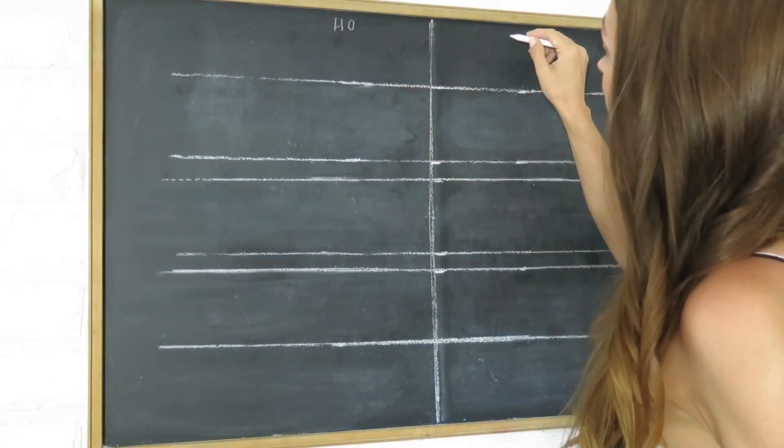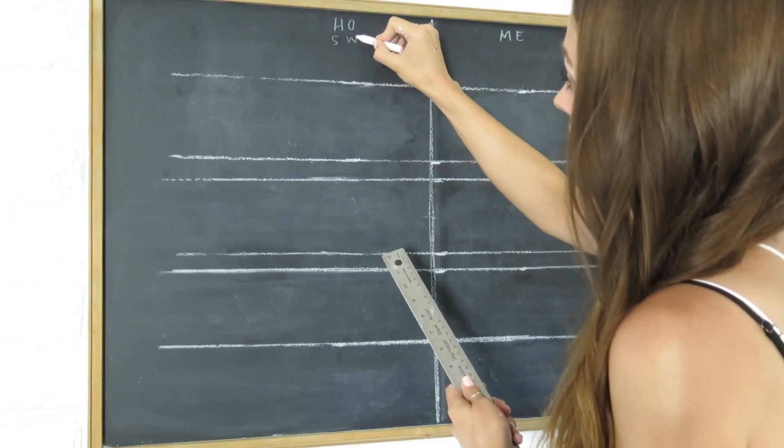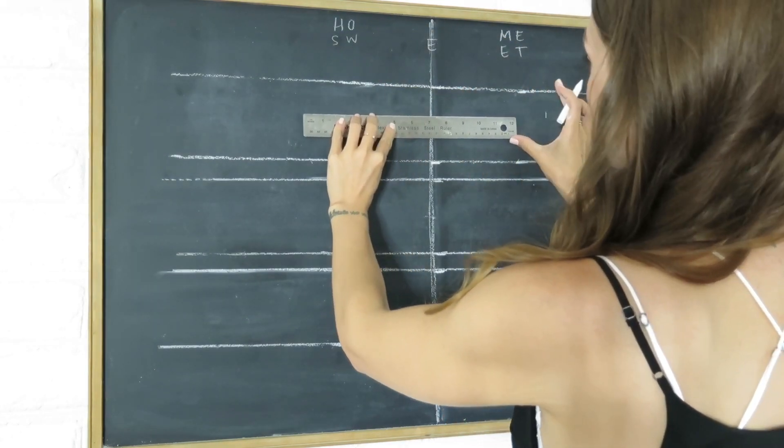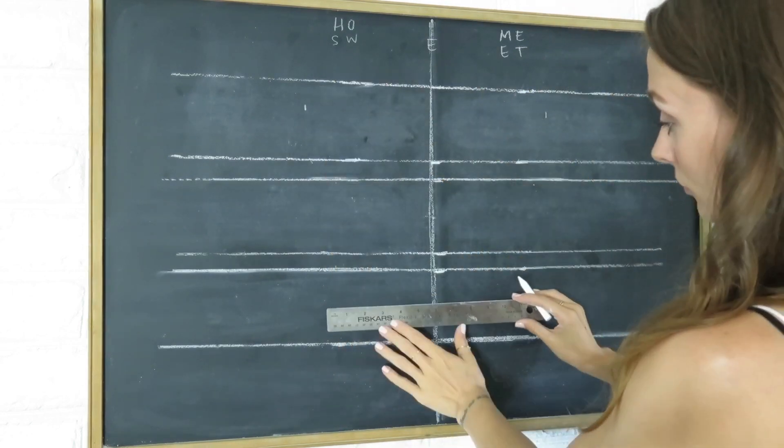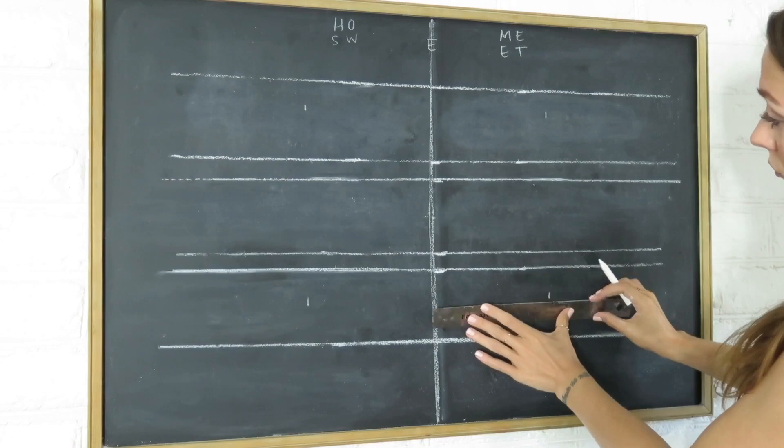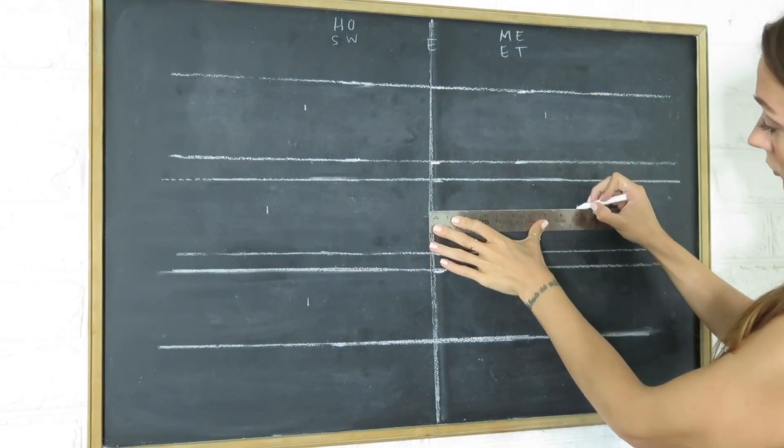When you finish your guidelines, do a light layer of chalk to erase all the smudges and fingerprints. I also marked where each word should begin and end, and I made a note at the top of the chalkboard to show me which letters should fall on each side of the vertical centerline.